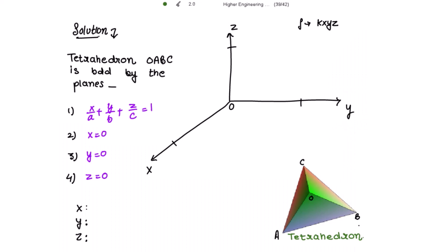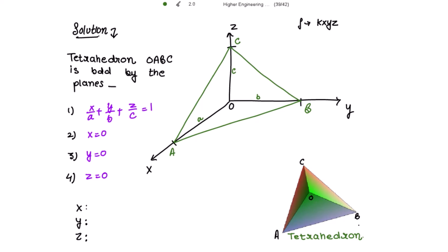Let the distance from the origin to point A on the x-axis be a, the distance from the origin to point B be b, and the distance from the origin to point C be c.